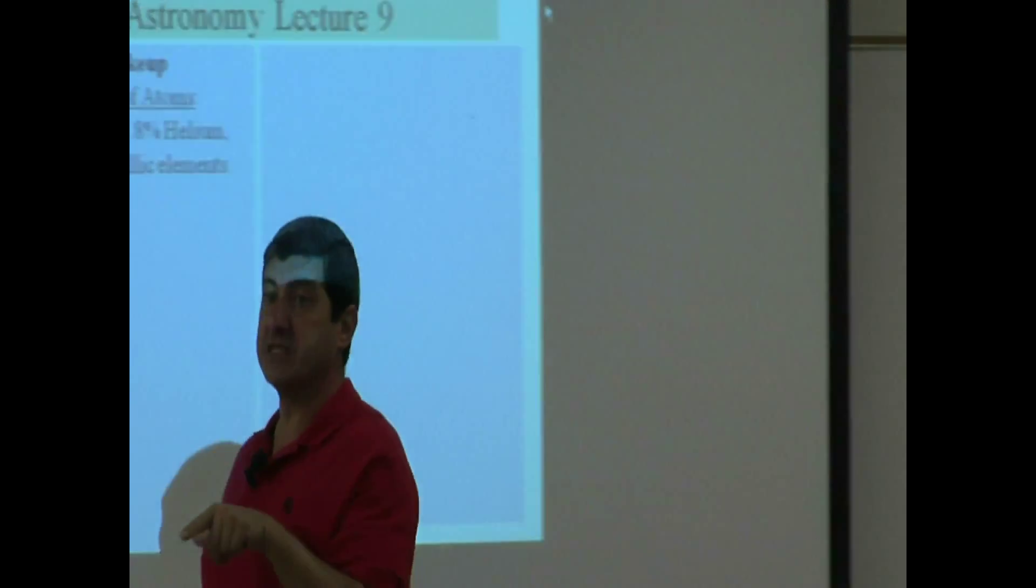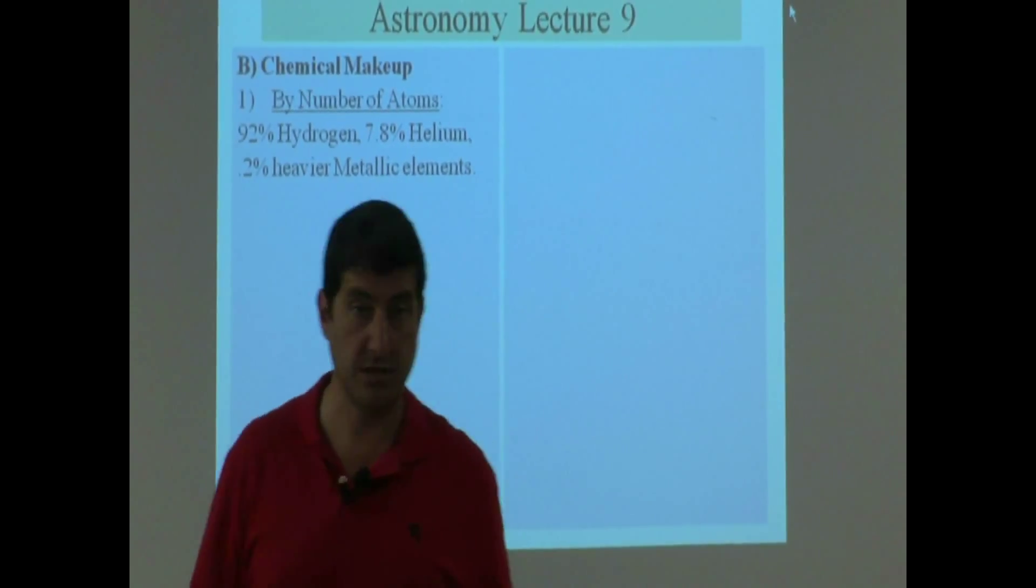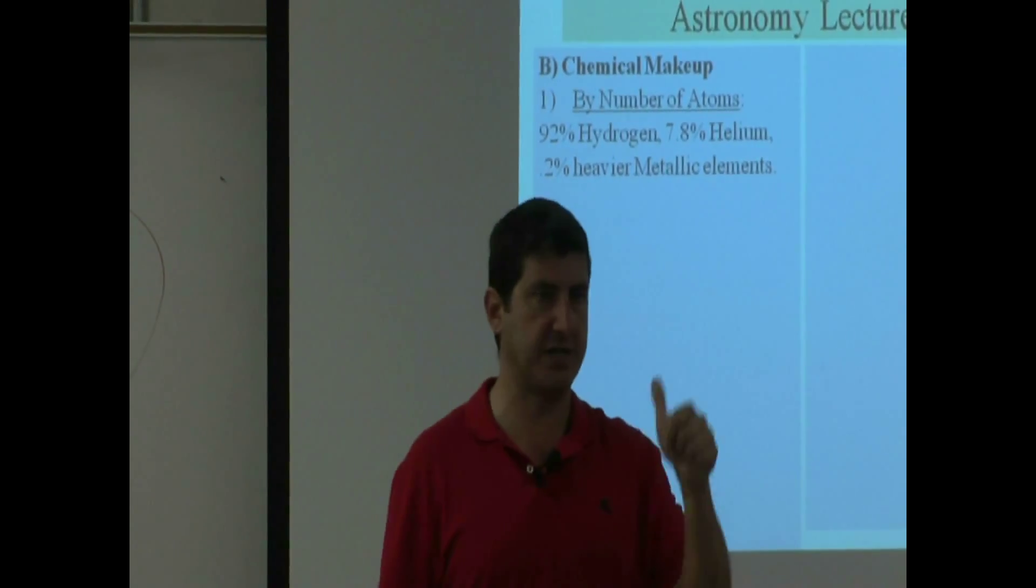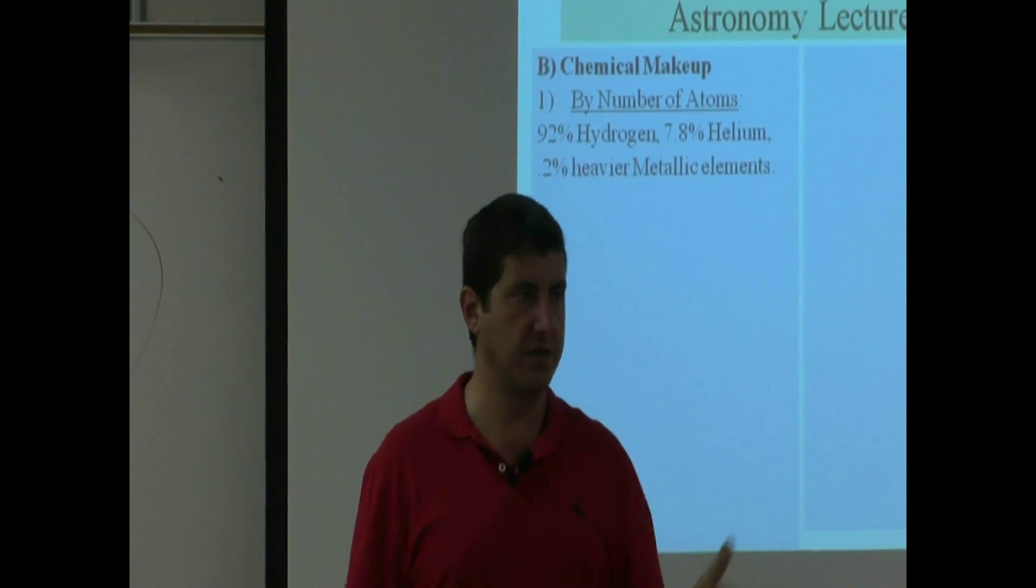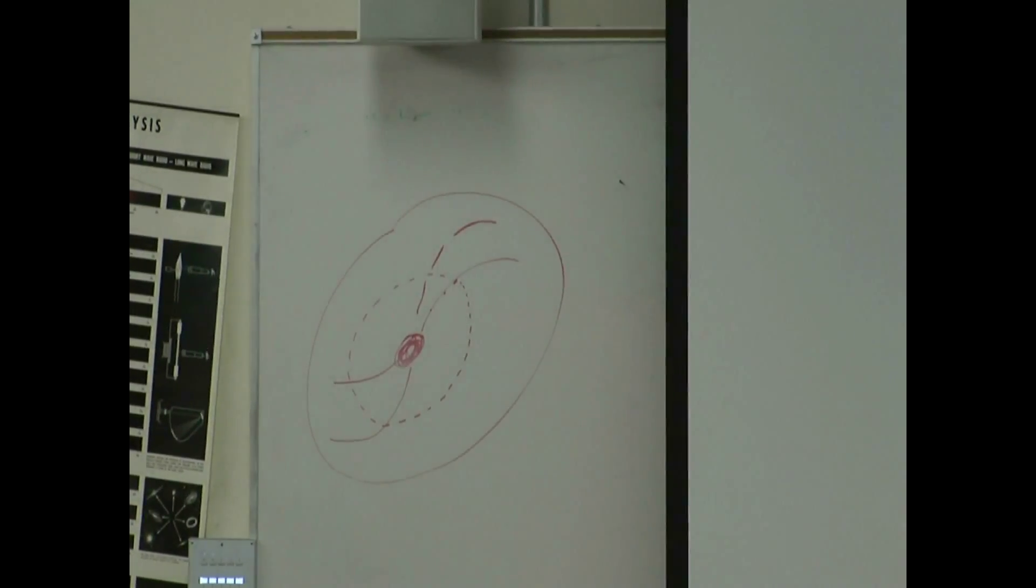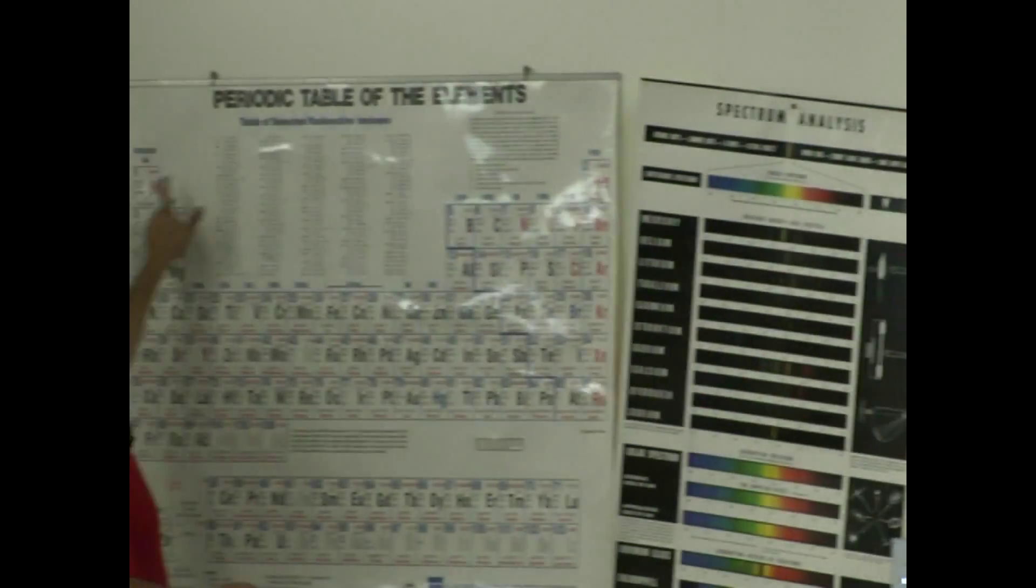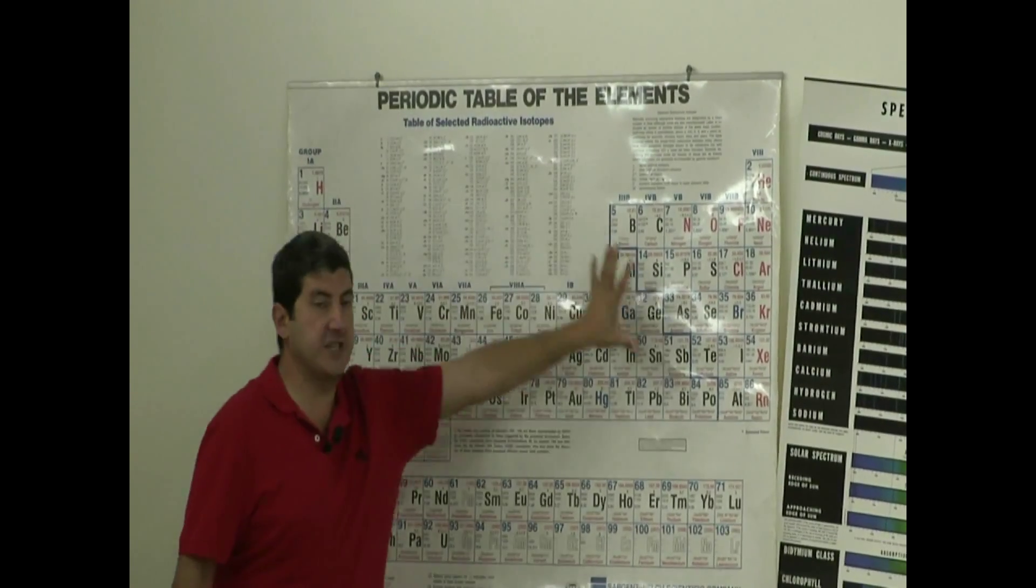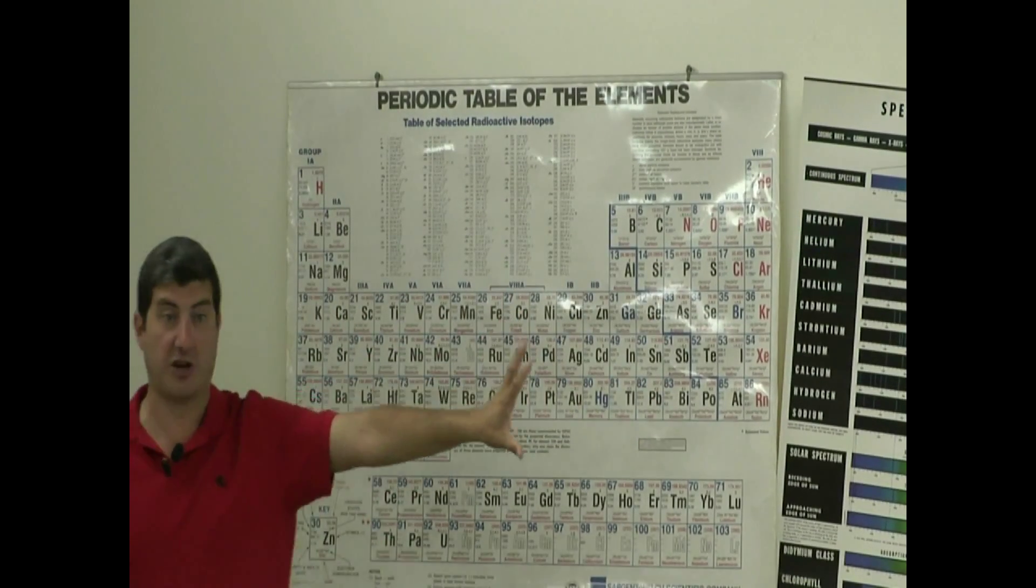Basically what happened is when the Big Bang happened in the beginning of the universe, the Big Bang gave us the three lightest elements. Hydrogen, helium, lithium. There are these ones here. Hydrogen, helium, lithium.